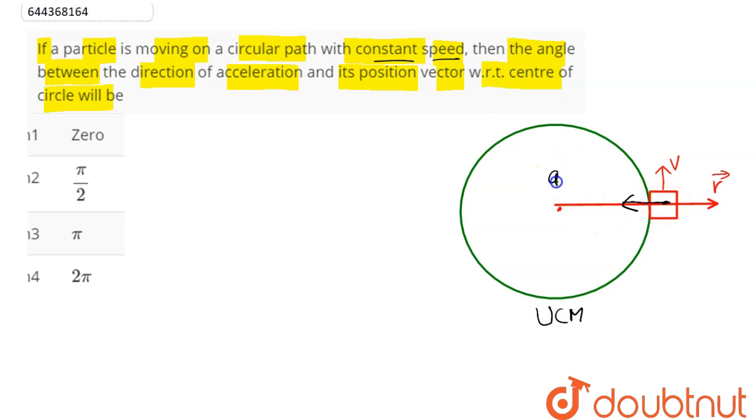In this case, the acceleration will be centripetal acceleration, which is towards the center of the circle, and its magnitude is given as V² by R. Hence, we can see the direction - that is, the angle between centripetal acceleration and position vector.